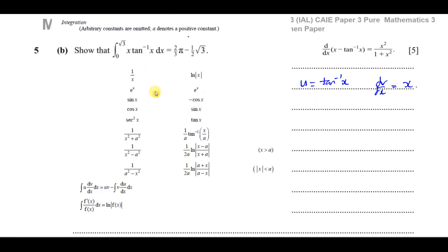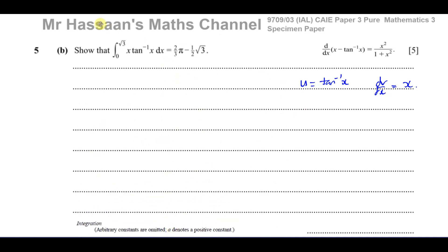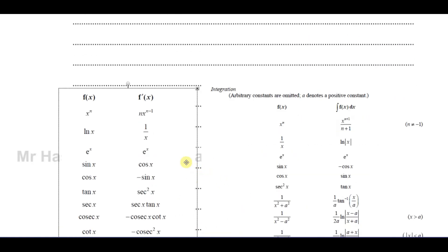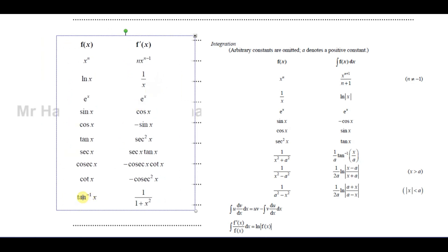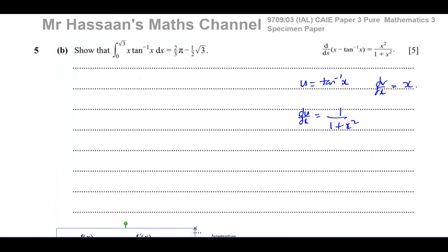When we differentiate inverse tan of x, we get du/dx equal to 1 over 1 plus x squared. That's confirmed from the formula sheet. And v is the integral of x, which gives us x squared over 2. Now we can apply the formula.